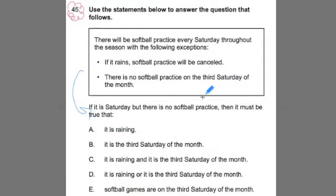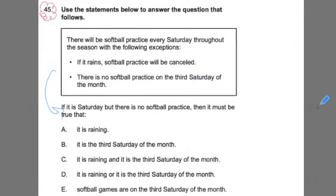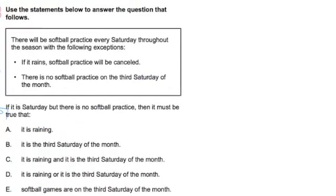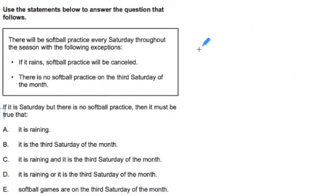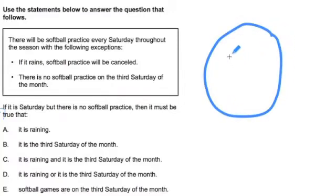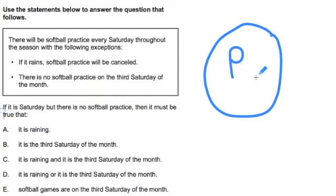Before I read those options, let's take a moment and organize the information. We'll start by drawing a circle here. This circle is going to represent all the practices that happen. Because you're a dedicated softball player, you want to make every single practice, so that circle represents all the practices that are going to be happening.